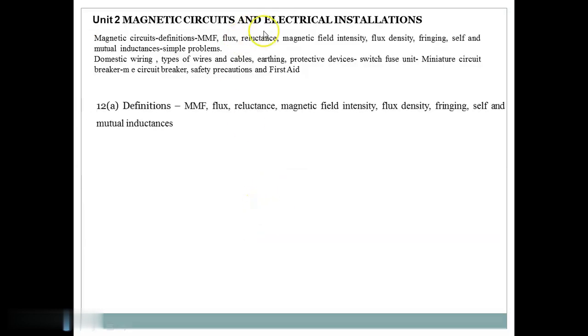Second unit is Magnetic Circuits and Electrical Installation. First half of second unit is Magnetic Circuits and the next half is Electrical Installation. Based on that, let us divide 12th Question into two categories. If you consider 12A, definitions of basic magnetic parameters like MMF, flux reluctance, magnetic field intensity, flux density, fringing effect, self and mutual inductance.